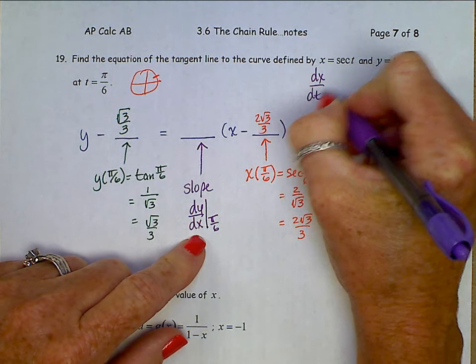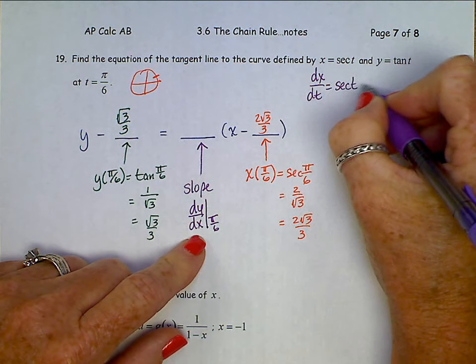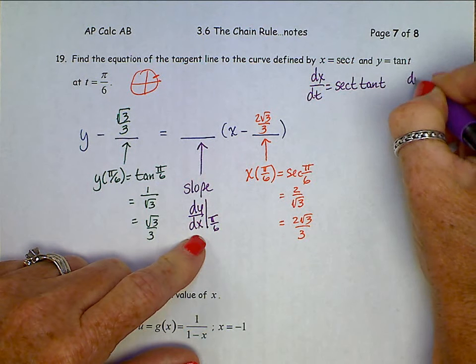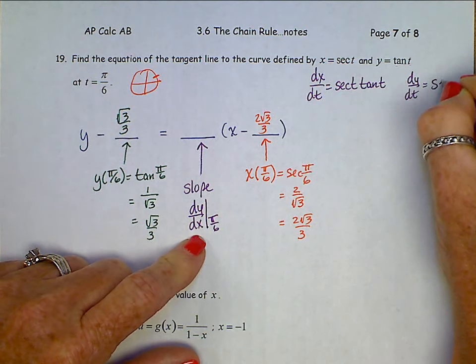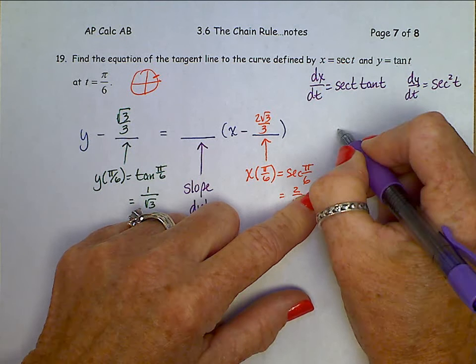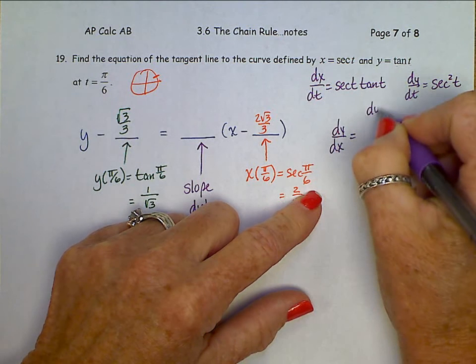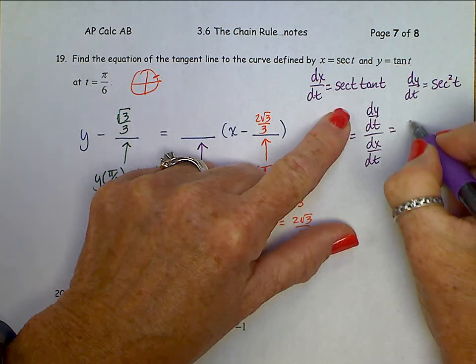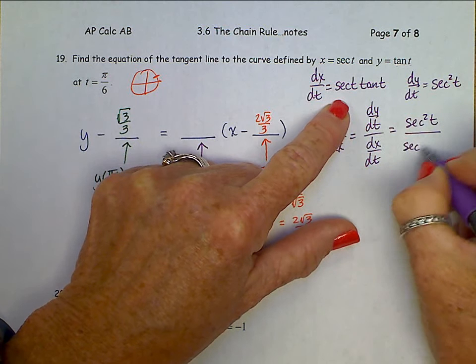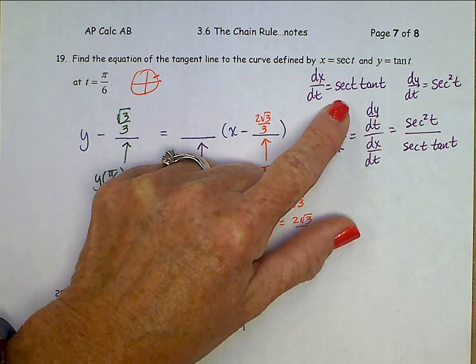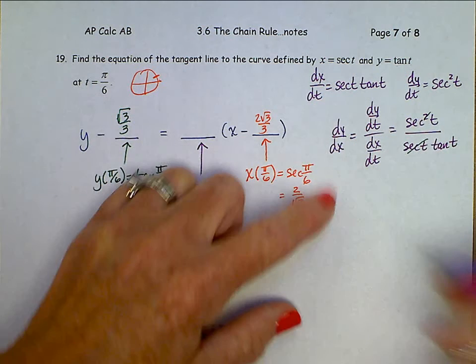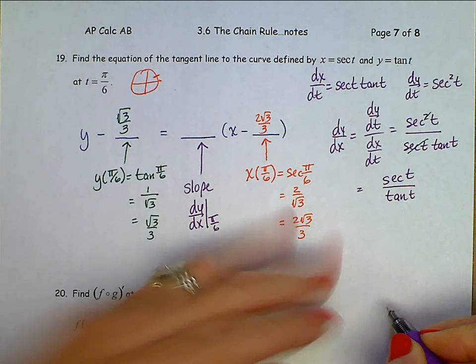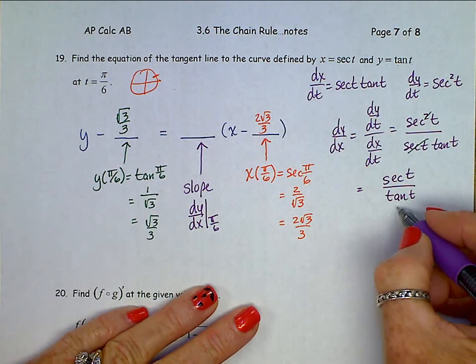dx dt is the derivative of secant, that's secant t tangent t, and dy dt will be the derivative of tangent or secant squared t. So dy dx is dy dt divided by dx dt, which is secant squared t over secant t tangent t, and we see one of those secants divide out. So this derivative is just secant t divided by tangent t.